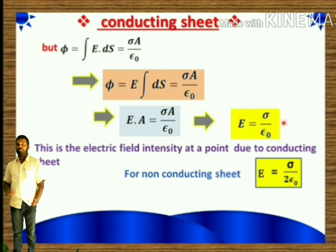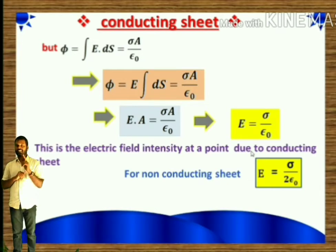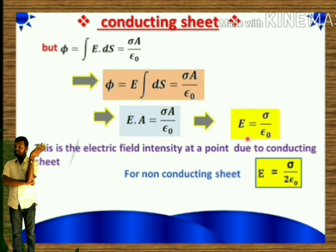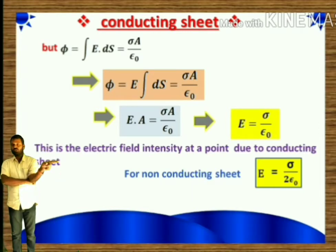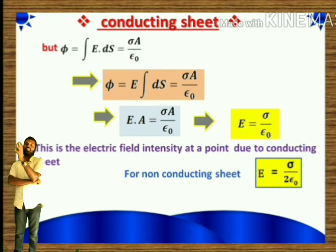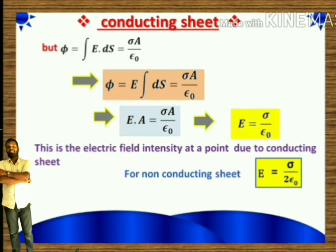The electric field due to a conducting surface is E = sigma/ε₀, while for a non-conducting surface E = sigma/2ε₀. This means the electric field due to a non-conducting sheet is half the electric field due to a conducting sheet.